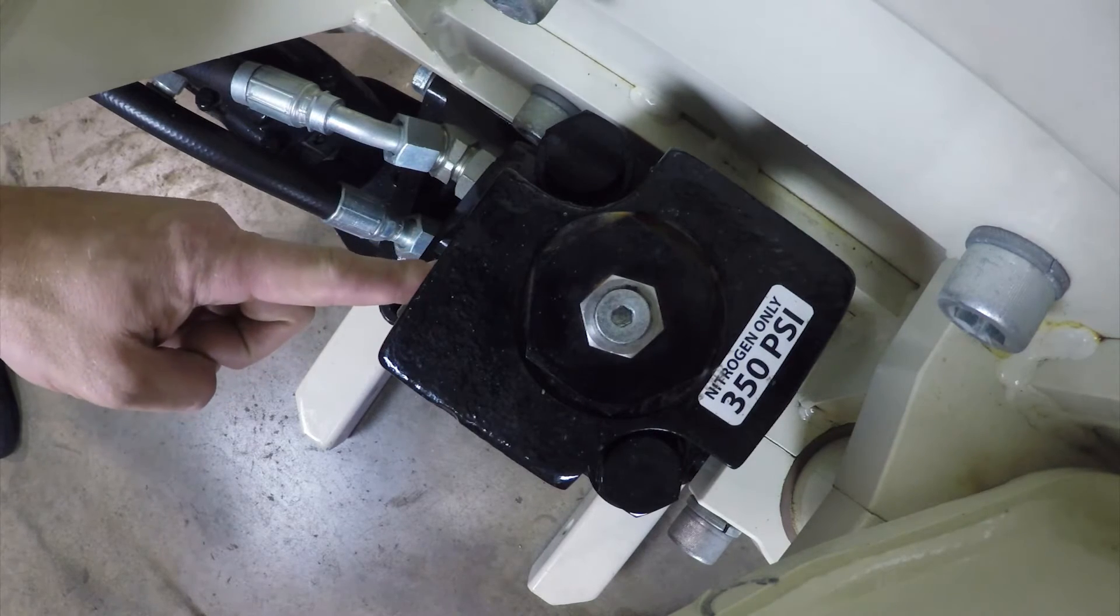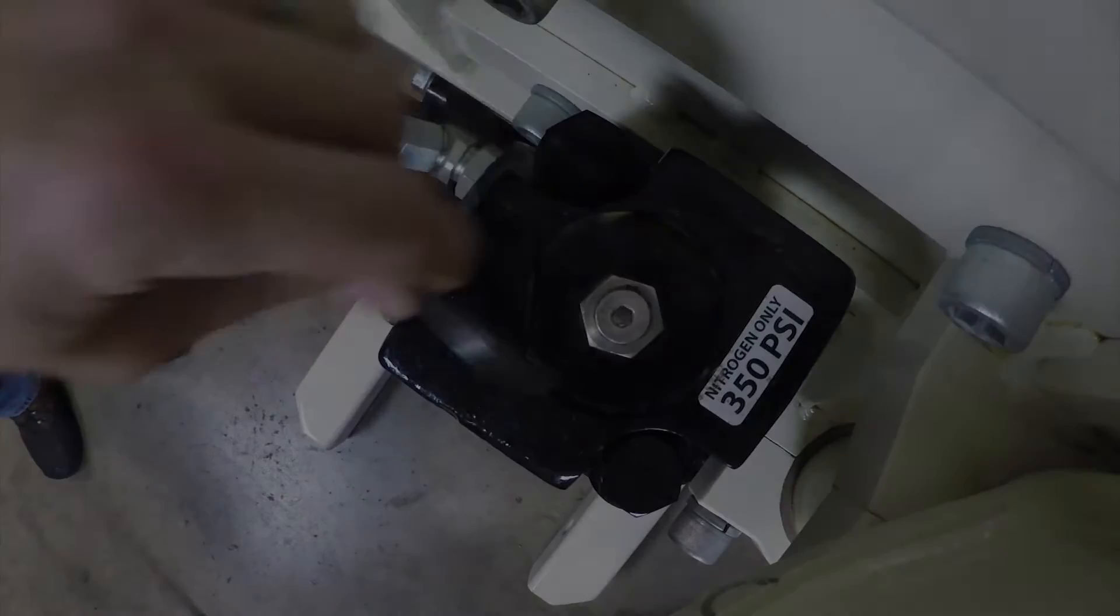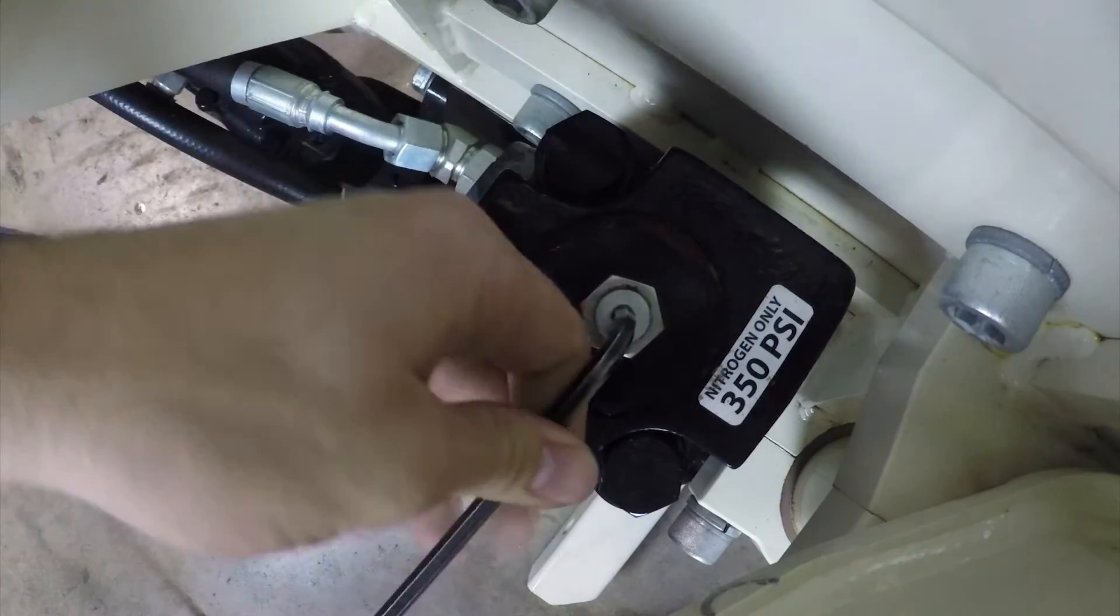This is the GH64 hammer, this is the charge valve and this is the cap. Using your hex key, remove the cap from the valve.